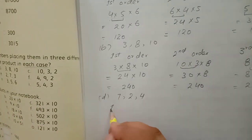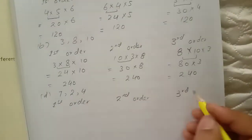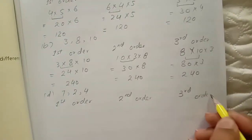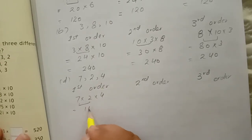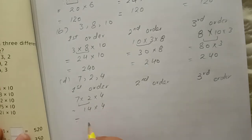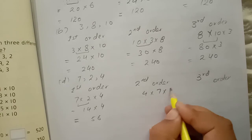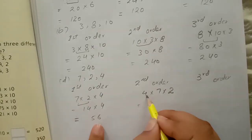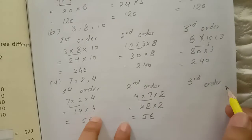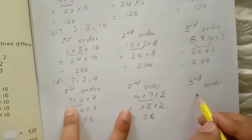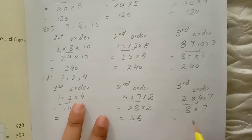Part C — numbers are 7, 2, and 4. Write headings: first order, second order, third order. First order: 7 × 2 × 4 — multiply 7 × 2 = 14, then 14 × 4 = 56. Second order: write 4 first — 4 × 7 × 2 — multiply 4 × 7 = 28, then 28 × 2 = 56. Third order: 2 × 4 × 7 — multiply 2 × 4 = 8, then 8 × 7 = 56.